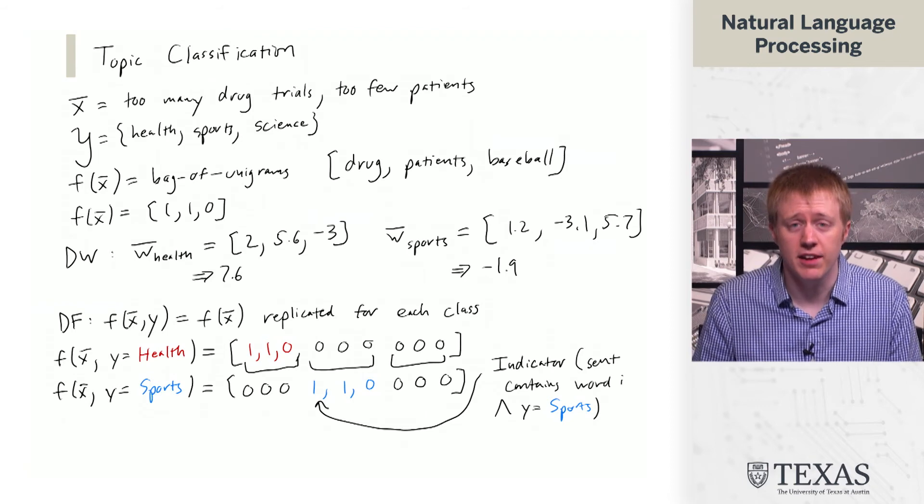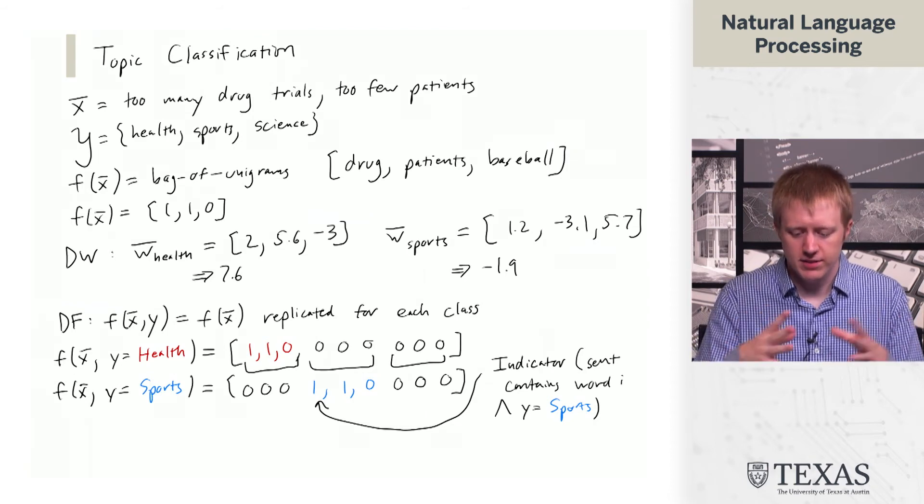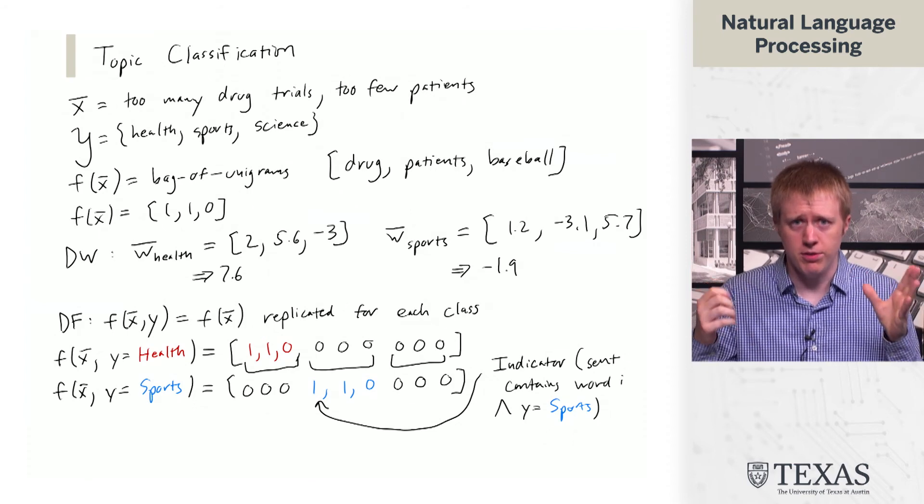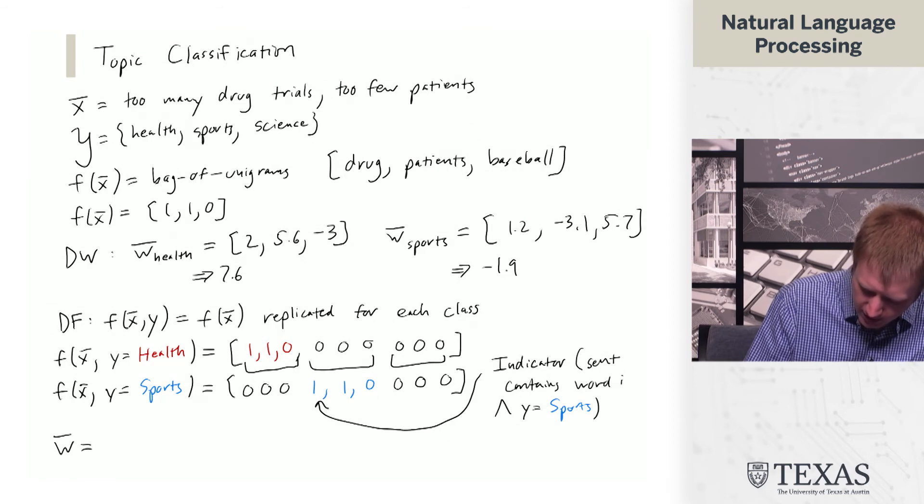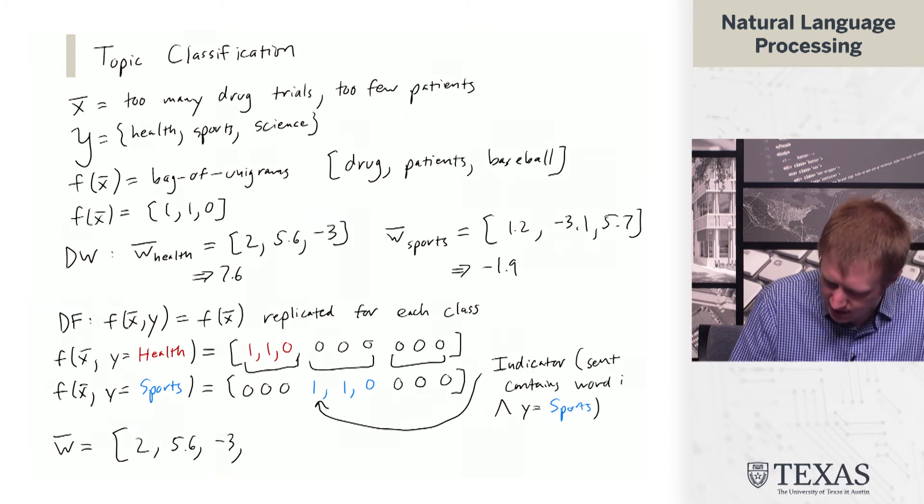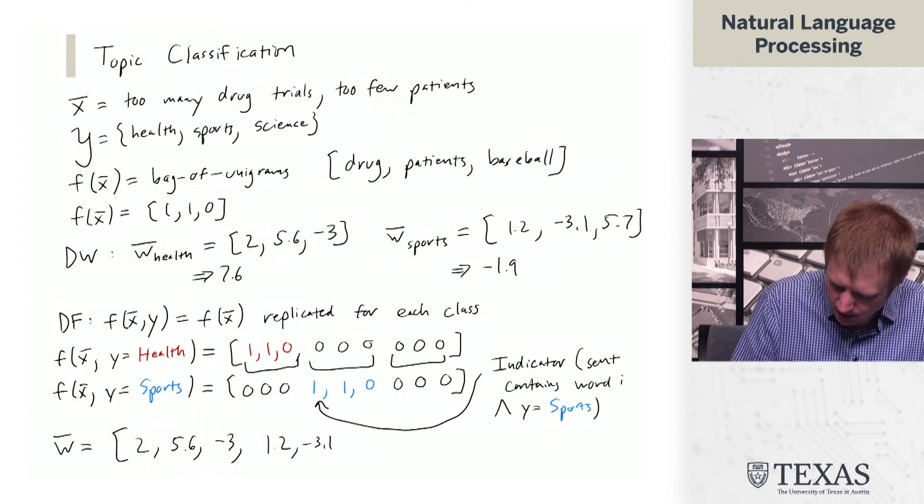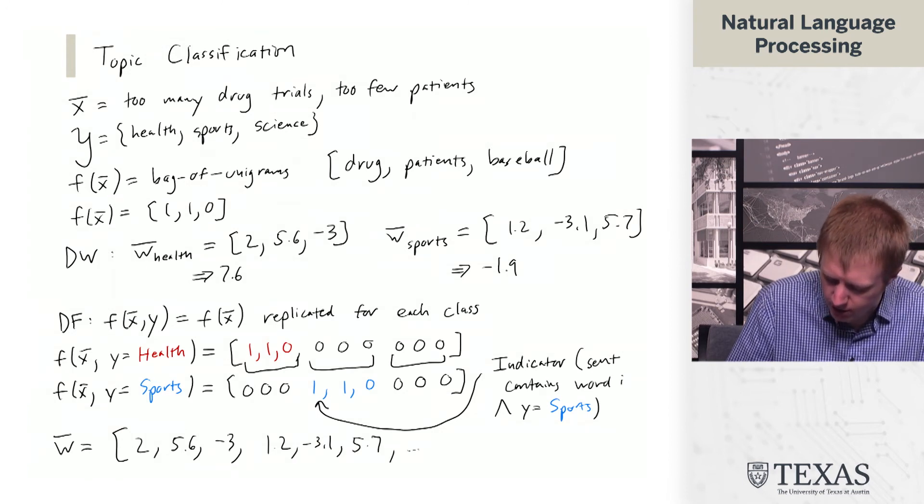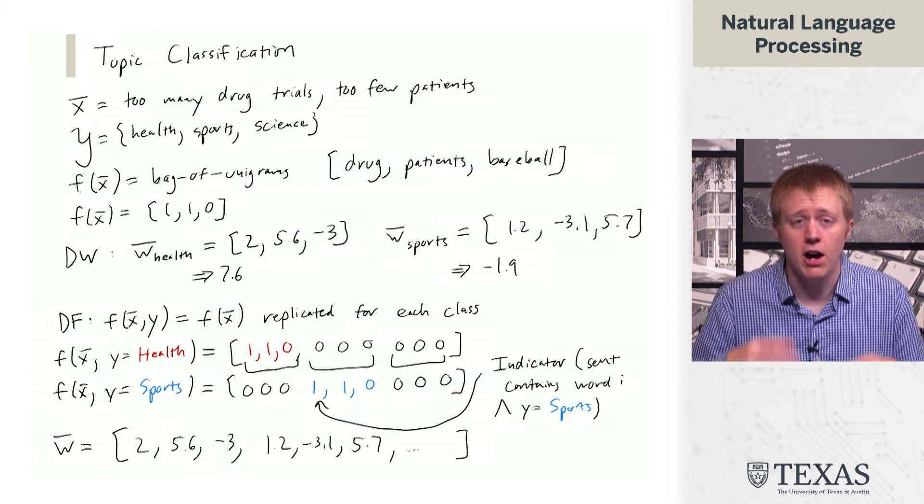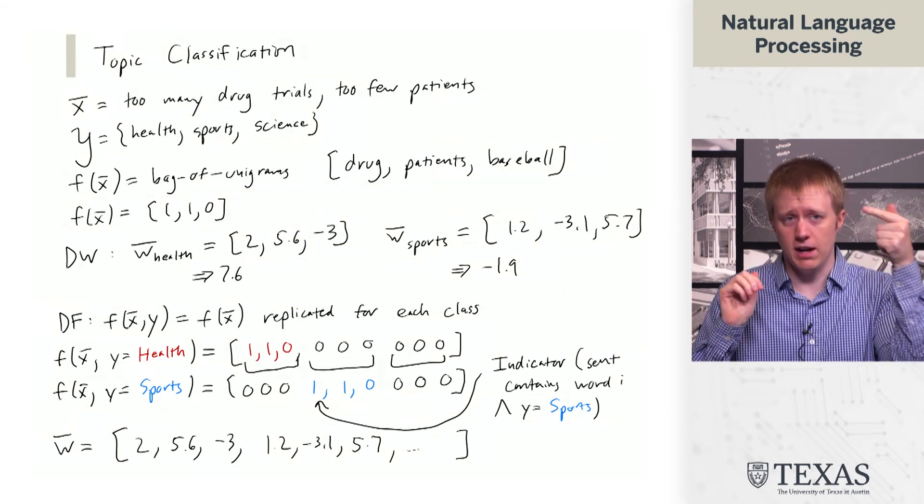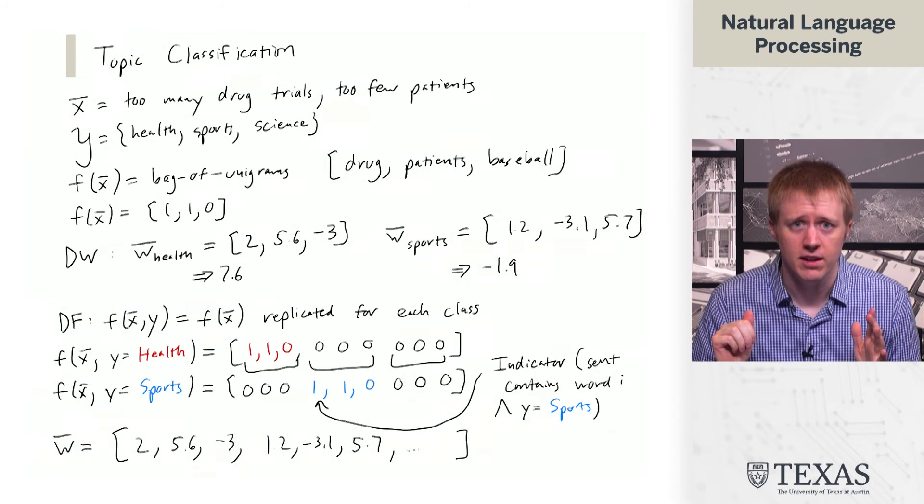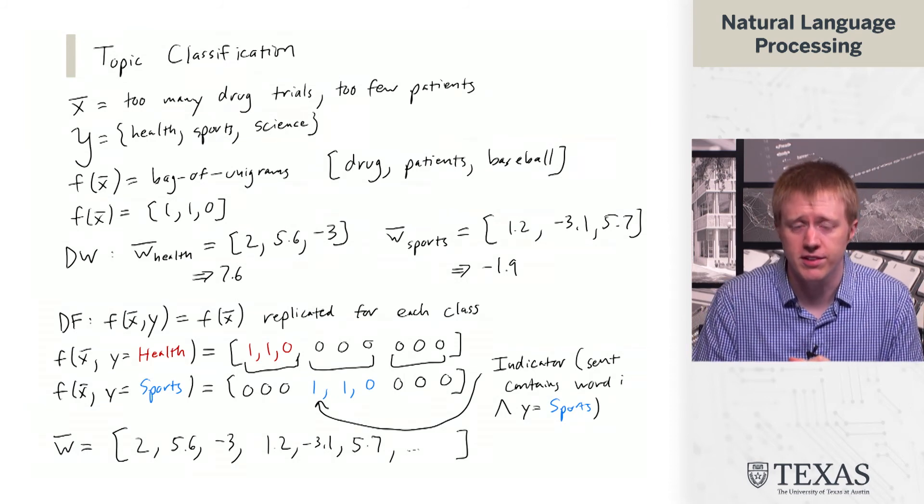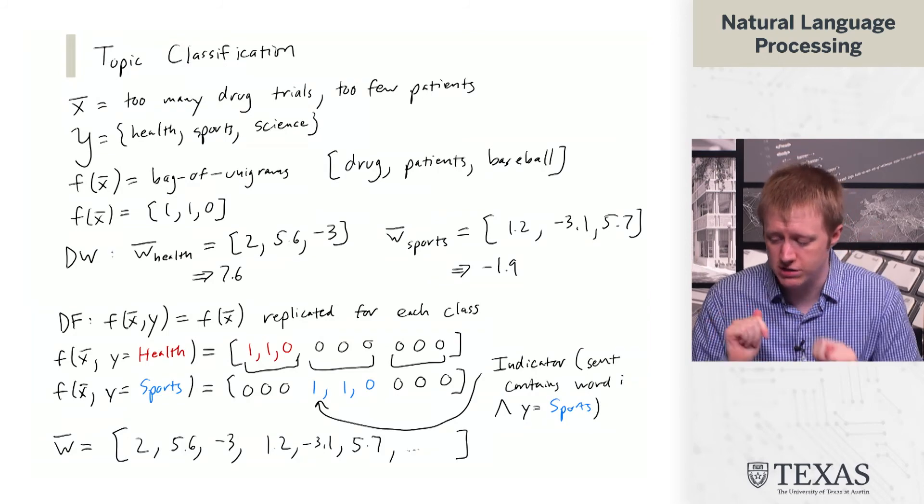The reasoning behind this is that we're defining this conjunctive feature that looks at both x and y. Now what we can do is define a single weight vector w, where it is a linearization of the weights from before. All the weights can live in a single weight vector, and as you toggle between which y you're hypothesizing, you end up with different values of this dot product because the features now change in this block structure.